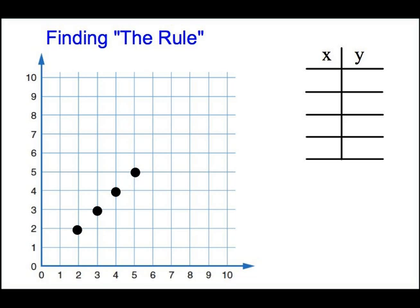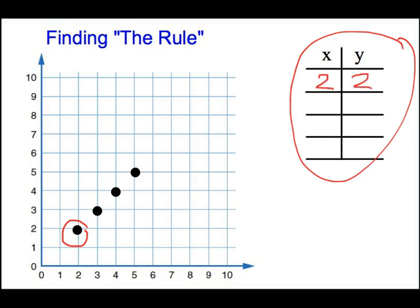Alright, we're going to go into another example. Miss Cater did an awesome job of showing you guys how to take your points, put them into the X, Y chart, and then look at the pattern. So we're going to show another example of that. So point 1 here is at over 2, up 2. So we're just going to write 2, 2.